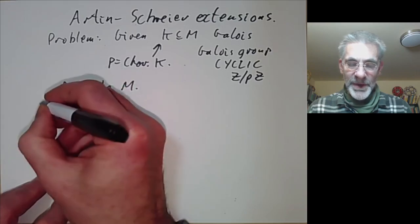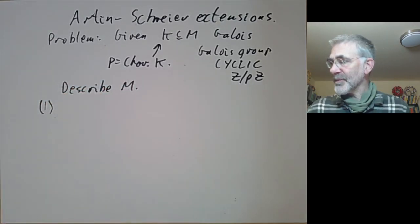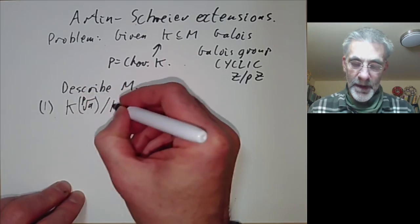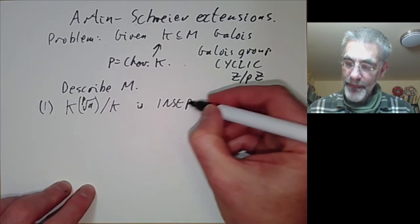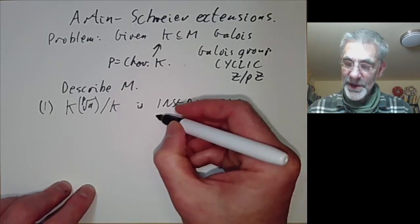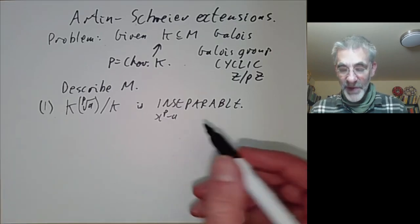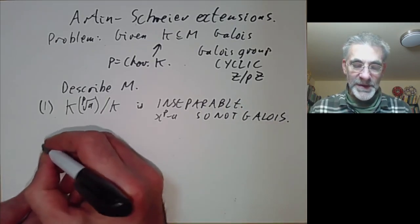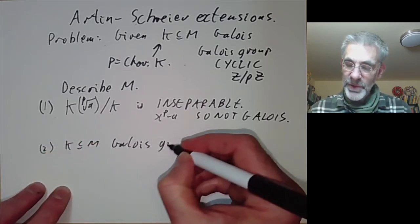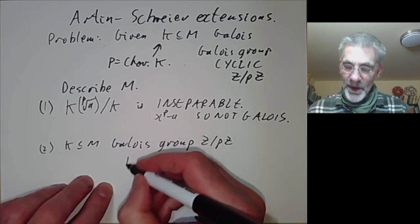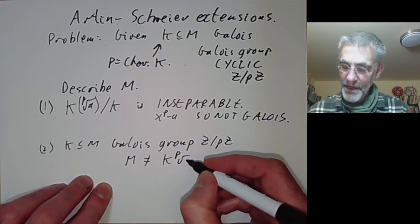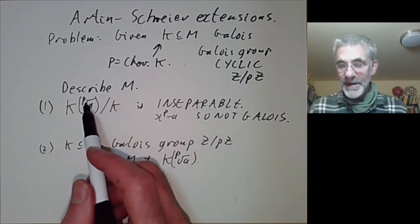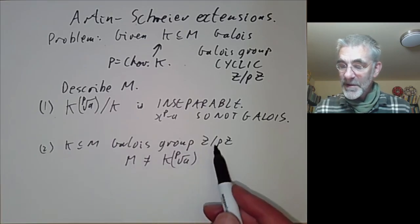We first notice that M can't be described by radicals. The first problem is that if we take a radical extension of degree P — say we adjoin the Pth root of some element A — this is inseparable, because the equation X^P minus A equals zero has derivative zero, so all its roots are the same, and in particular it's not Galois. So if you've got an extension K over M that's Galois with group Z/PZ, M cannot be obtained as a radical extension of K because radical extensions are inseparable, not Galois. Radical extensions of degree P in characteristic P have very little to do with Galois extensions.